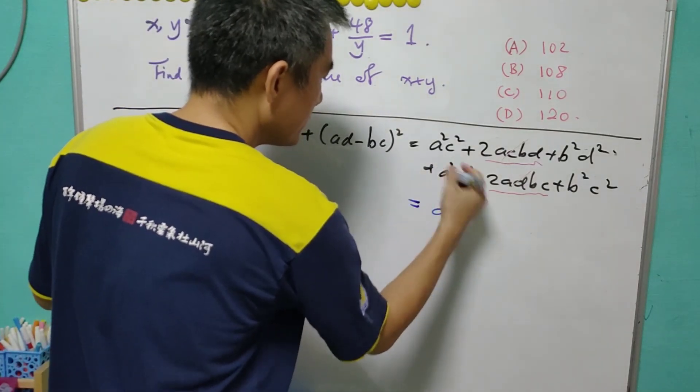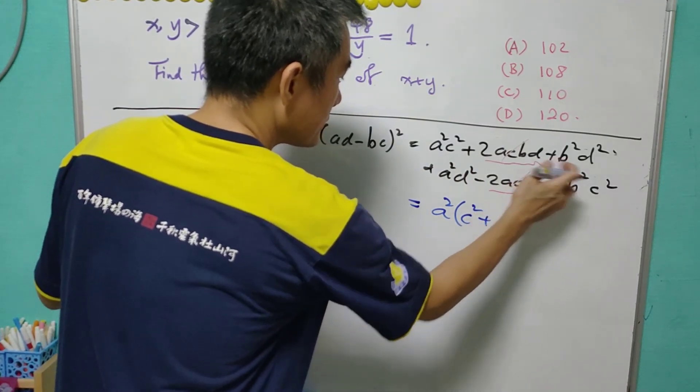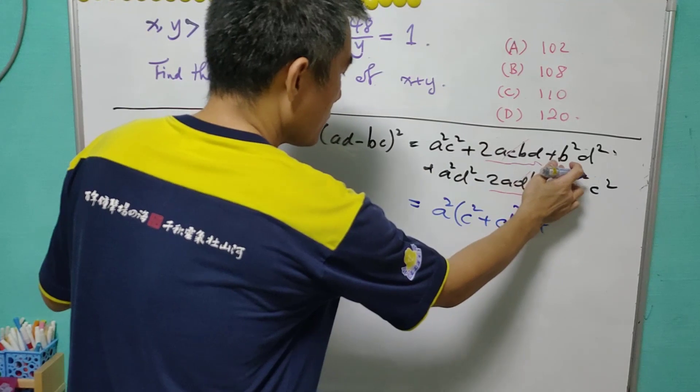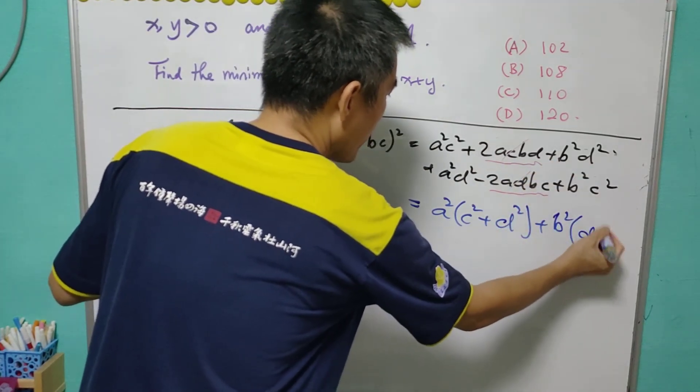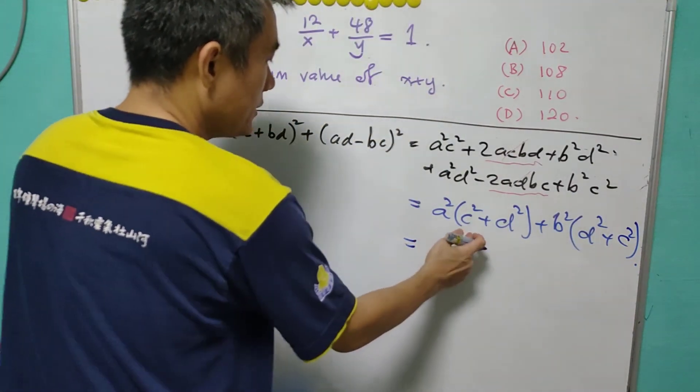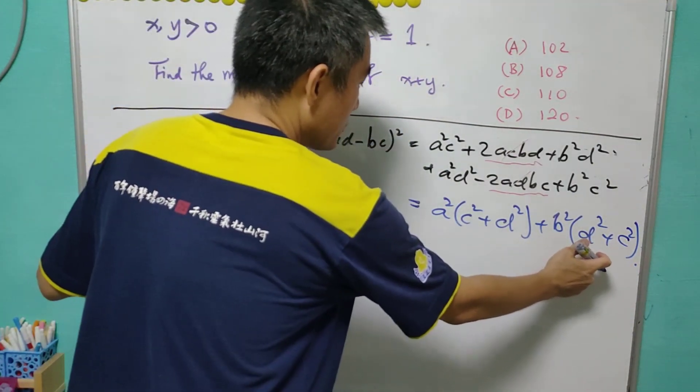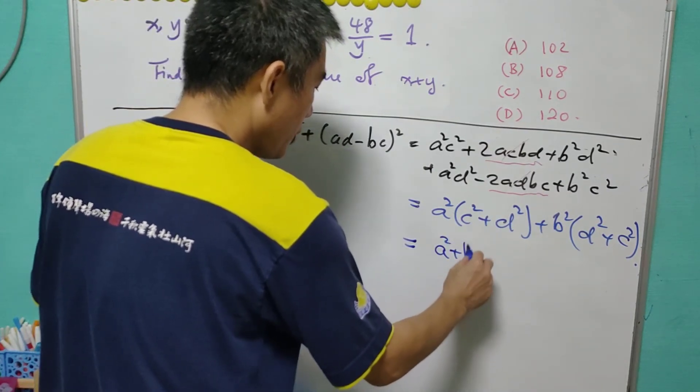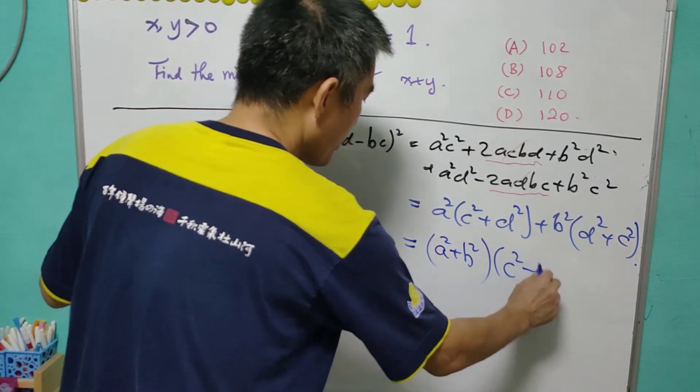What we have here is a²c² + b²d² + a²d² + b²c². We can further factorize it as (a² + b²)(c² + d²).